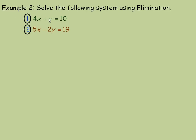If I were to multiply this equation by 2, then this would be exactly the opposite of this, but that's okay. So I'm going to first take the first equation and multiply it by 2. And so this would be 8x plus 2y equals 20. Then we can leave the second equation alone, because the 2y and negative 2y are exact opposites.